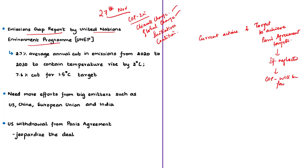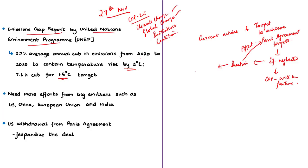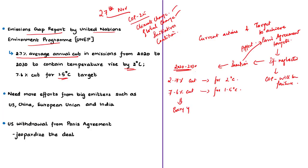Every year of inaction jeopardizes the main goal of the Paris Agreement — to keep the rise in global temperature over pre-industrial times below 2 degrees Celsius and ideally at 1.5 degrees Celsius. The Emissions Gap Report estimates there would have to be a 2.7% average annual cut in emissions from 2020 to 2030 for the temperature rise to be contained at 2 degrees Celsius. For the more ambitious 1.5 degrees Celsius target, we need an average annual cut in emissions of around 7.6%, which is quite ambitious.